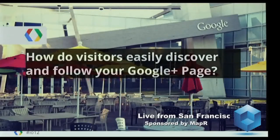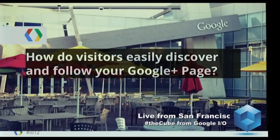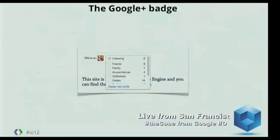At this point, I have a website. People can find it in search. They can choose to stay informed about it by following it on Google Plus. But how do they discover I have a Google Plus page? Well, the way we do that is quite simple. We have something we call the Google Plus badge, and what this does is give you a little snippet of code you can put on your website so people can choose to use that to follow your page.